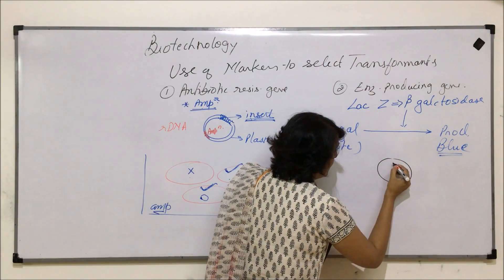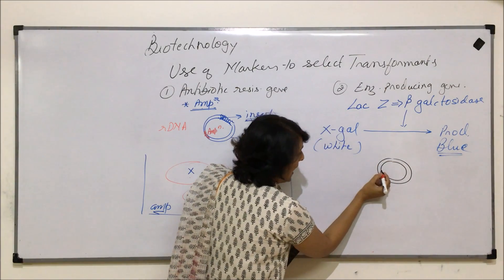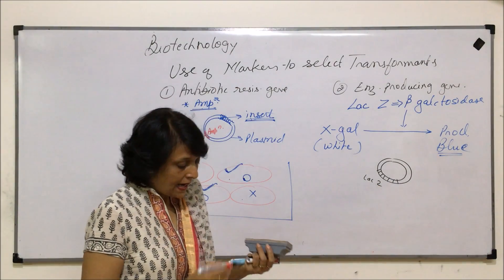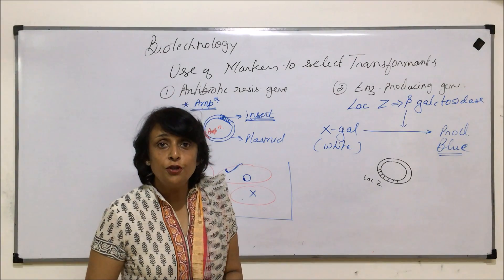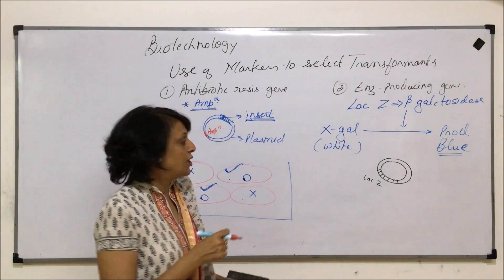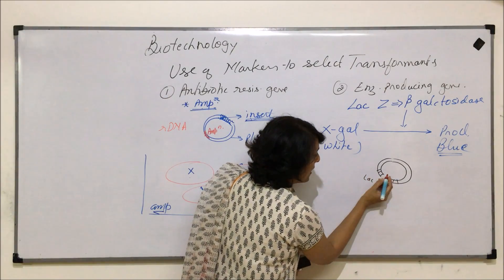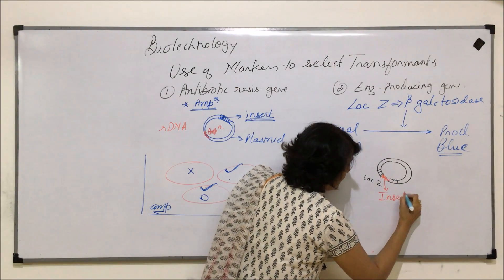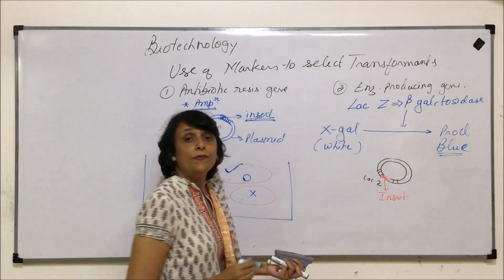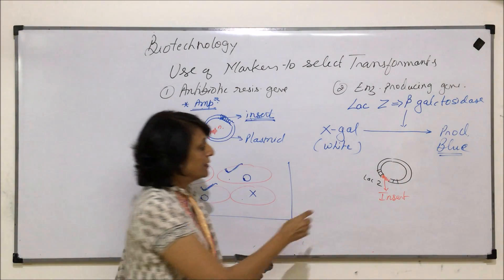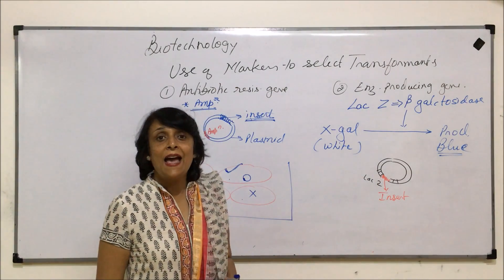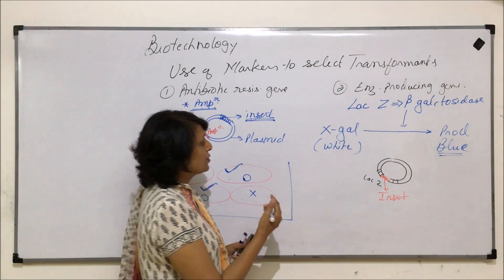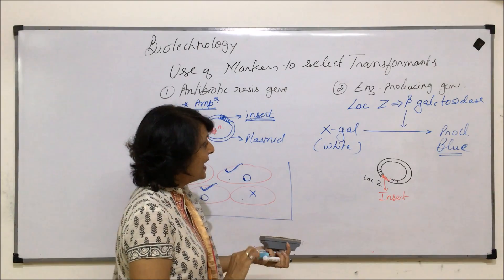Say this is our plasmid, which we are using as a vector, and here is our LAGZ gene. In this case, we introduce the insert into the gene — this is where our insert will be introduced. By introducing this insert into the gene, we have inactivated the gene. That is why this process is also known as insertional inactivation.